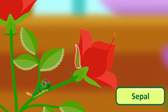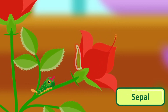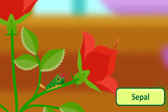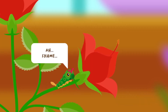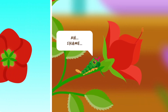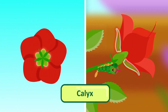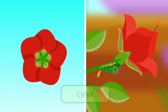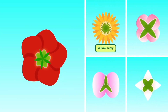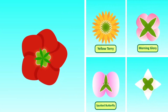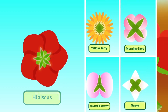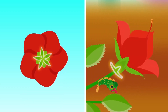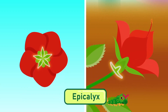Sepals: the modified leaves that cover a flower bud are called sepals. The covering also protects the other parts of the flower bud. All the sepals together make up the calyx. The sepals usually form the outermost whorl of floral leaves, but some flowers — for example hibiscus — have another whorl of floral leaves outside the sepals, which make up the epicalyx of the flower.